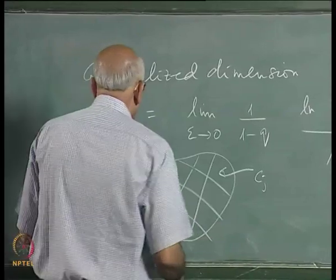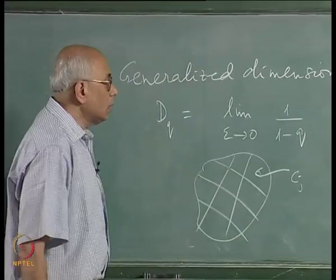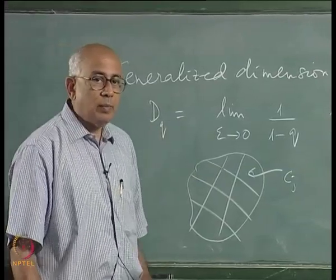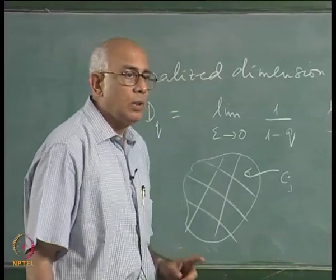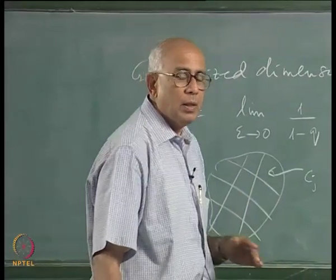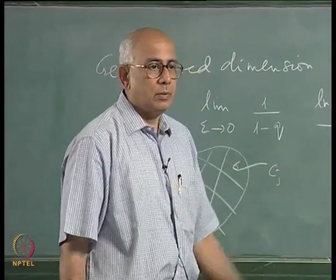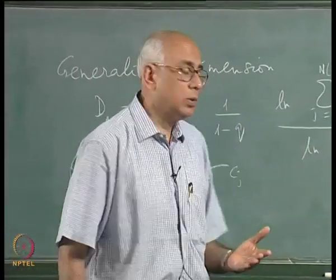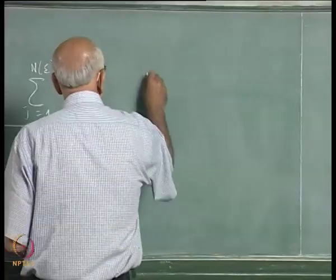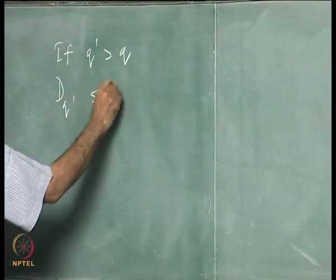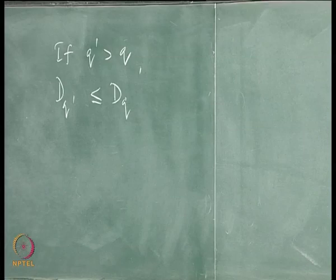In general there is no reason why D_q should be integer numbers; q need not be an integer, and D_q is some function of q. The general statement is that D_q is a non-increasing function of q — as q increases from −∞ to +∞, D_q decreases. Specifically, if q′ > q then D_{q′} ≤ D_q.